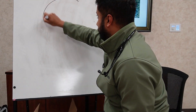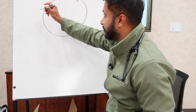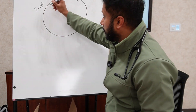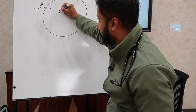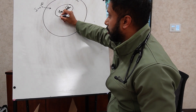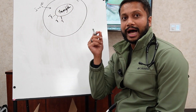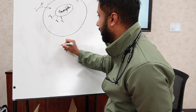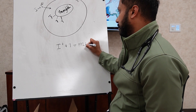Inside the thyroid follicles, to form thyroid hormones you take iodine and convert it to I+, bring it into the cell where you have a carrier protein called thyroglobulin. Thyroglobulin has tyrosine residues attached to it. You take I+ and attach it to tyrosine to form mono-iodothyrosine.